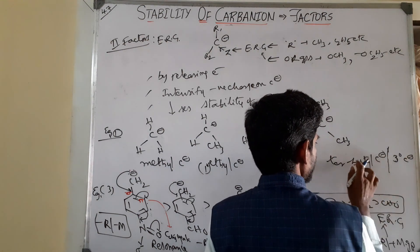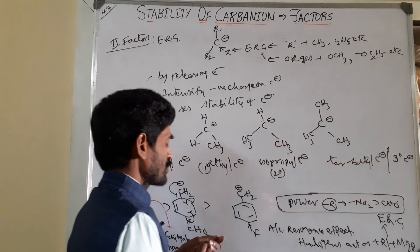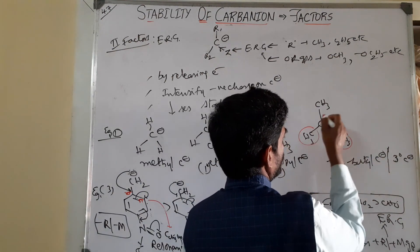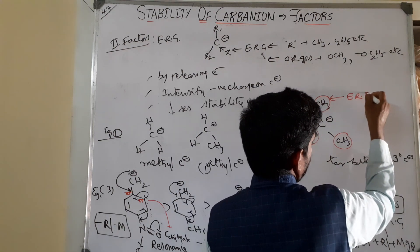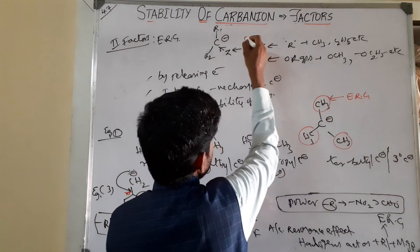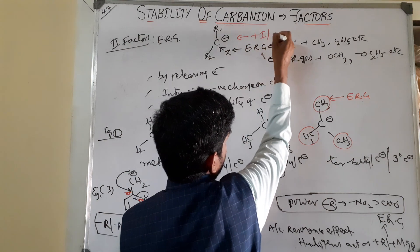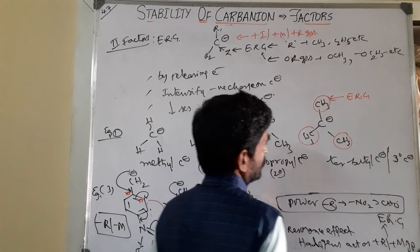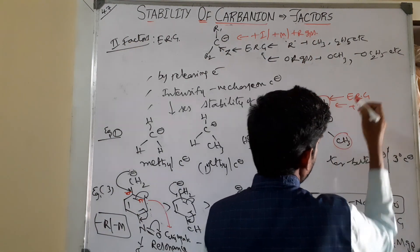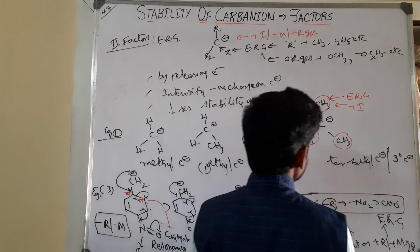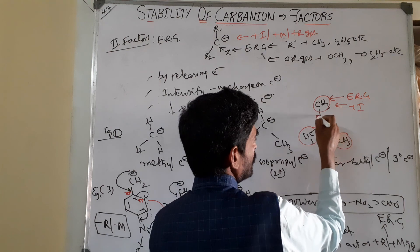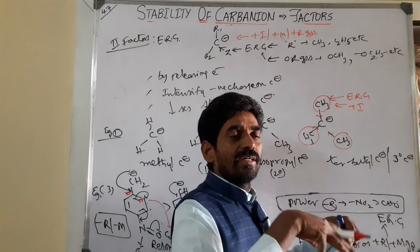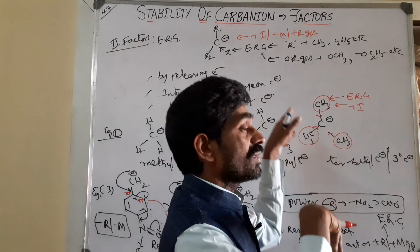Now, among these, which is more stable? These are all methyl groups - alkyl groups. Methyl groups are electron releasing groups, that is plus-I groups. The alkyl groups here are plus-I groups. Where three groups are present, more electrons are being released. Already the carbon has a negative charge, and again they are releasing electrons, so it feels burdened - that makes the carbanion more unstable.